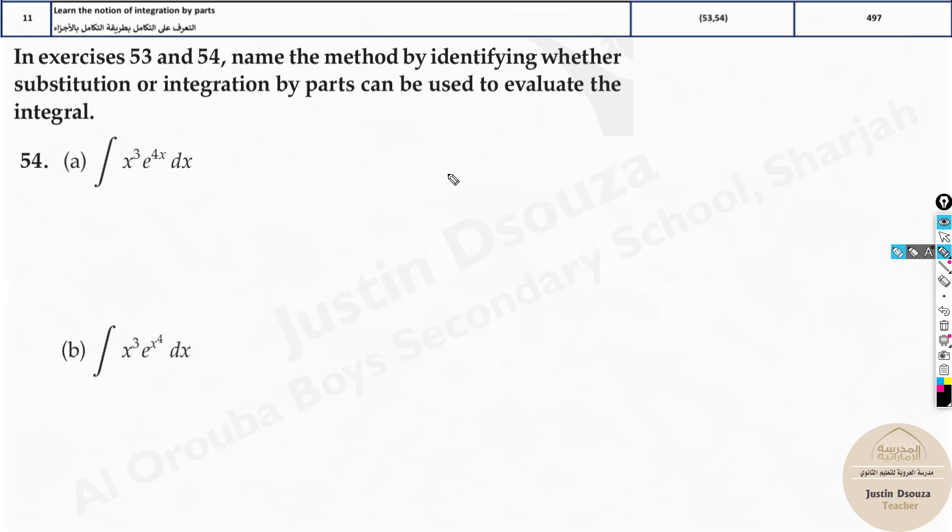Now here, whenever we have e to anything, we take that as u. Let's take it and check. 4x, can it be u? What will be du? 4. It doesn't help us because we have x cube here. This cannot be done by u substitution.